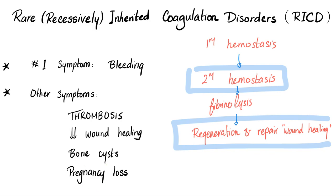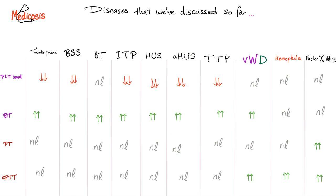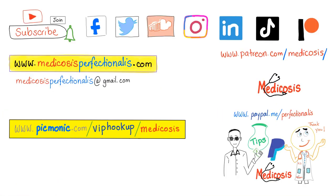Bone cysts can happen. Pregnancy loss is not uncommon. Adding factor 10 deficiency to our summary list: platelet count — normal; bleeding time — normal; PT — prolonged; PTT — prolonged.